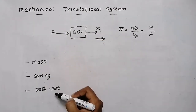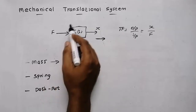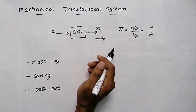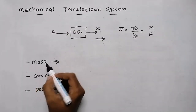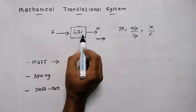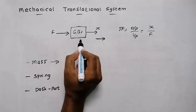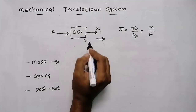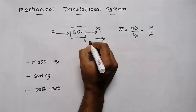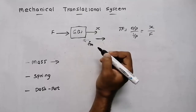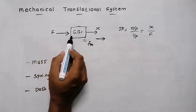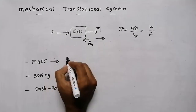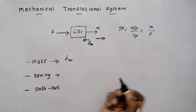Every mechanical system has a particular mass. For example, a car has a mass, a truck has a mass. When we apply a force to the mechanical system, due to the mass or weight of that body, there will be an opposing force. If I push a car the opposing force will be less; if I push a truck the opposing force will be greater. I am going to denote this opposing force due to mass as fm.